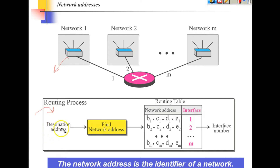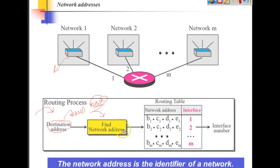Whenever any packet reaches the router, the packet contains the destination address. The router takes that destination address and performs an AND operation using the mask we discussed. This AND operation gives the network address. With this network address, the router looks into its routing table — if that network is connected, it forwards from port one; if the network address matches another entry, it forwards from port two, and so on.